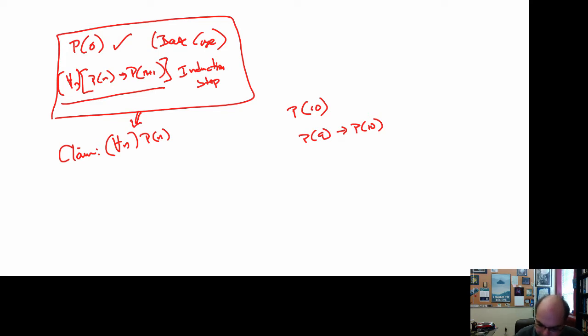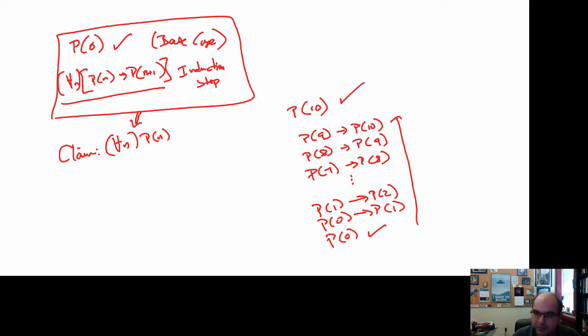Now, why do I believe that P of 9 is true? Well, I believe that because P of 8 implies P of 9. And I believe that because P of 7 implies P of 8. And so on. And eventually, I believe that because P of 1 implies P of 2. And P of 0 implies P of 1. And lo and behold, P of 0 is our base case. So we know that that one's true. And at that point, I can come back up here and go, yep, P of 10 must be true.